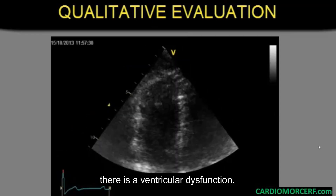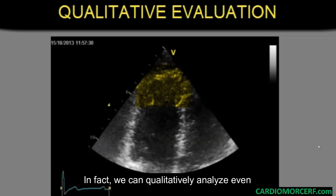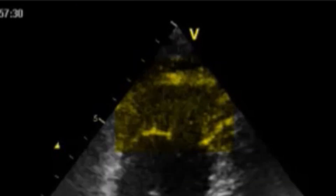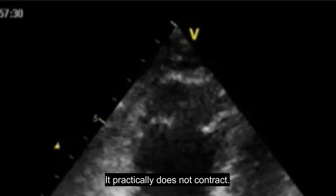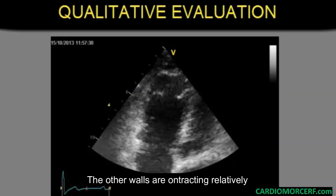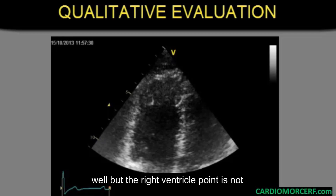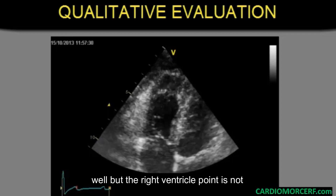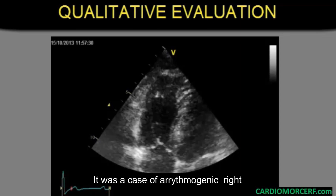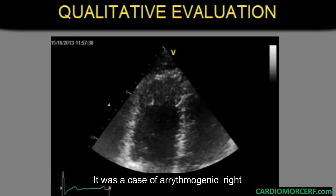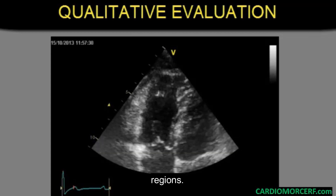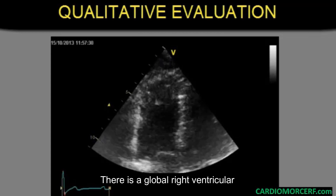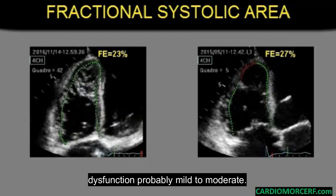There is no active contraction in these walls; therefore, there is ventricular dysfunction. In fact, we can qualitatively analyze even localized problems, as seen in the right ventricular tip — it practically does not contract. The other walls are contracting relatively well, but the right ventricular apex is not contracting. It was a case of arrhythmogenic right ventricular dysplasia. Although the basal regions contract well, there is global right ventricular dysfunction, probably mild to moderate.